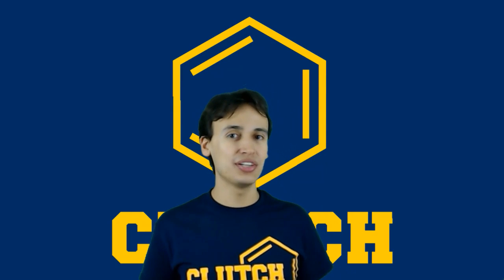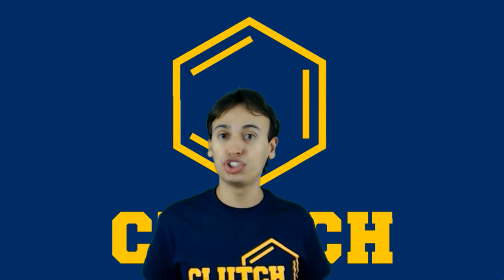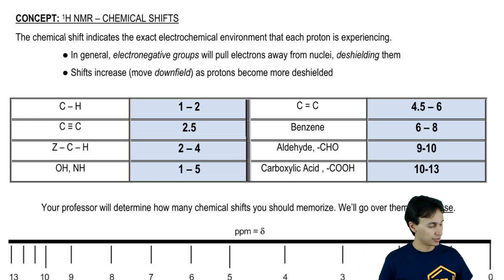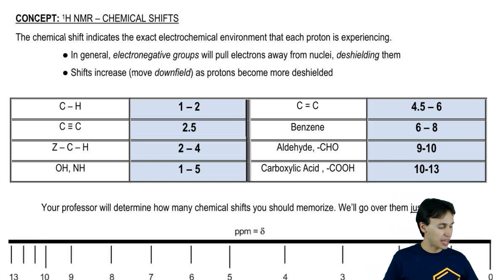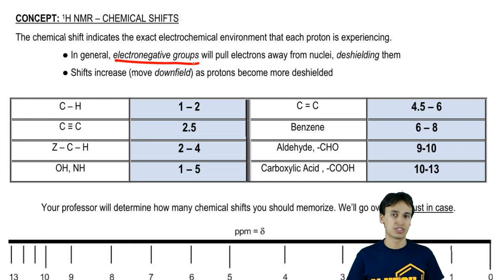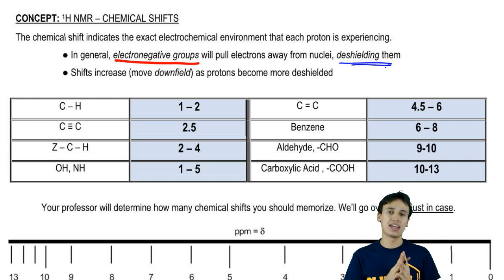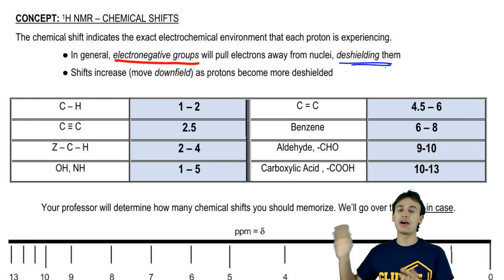Now that we know how to solve for the total number of signals in a proton NMR, it's time to move on to our second piece of information: the chemical shifts of each signal. The chemical shift indicates the exact electrochemical environment that each proton is experiencing. I know that sounds complicated, but there is a nice generalization we can make. Electronegative groups will pull electrons away from the nuclei, deshielding them, making them more naked so they experience the NMR more. The chemical shifts increase or move downfield - the number gets bigger as the protons become more deshielded.